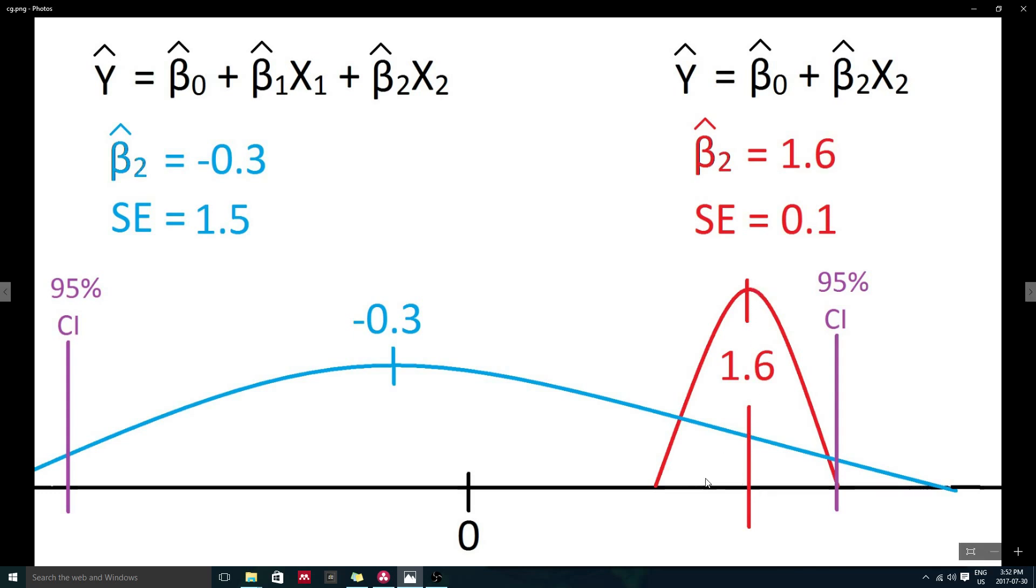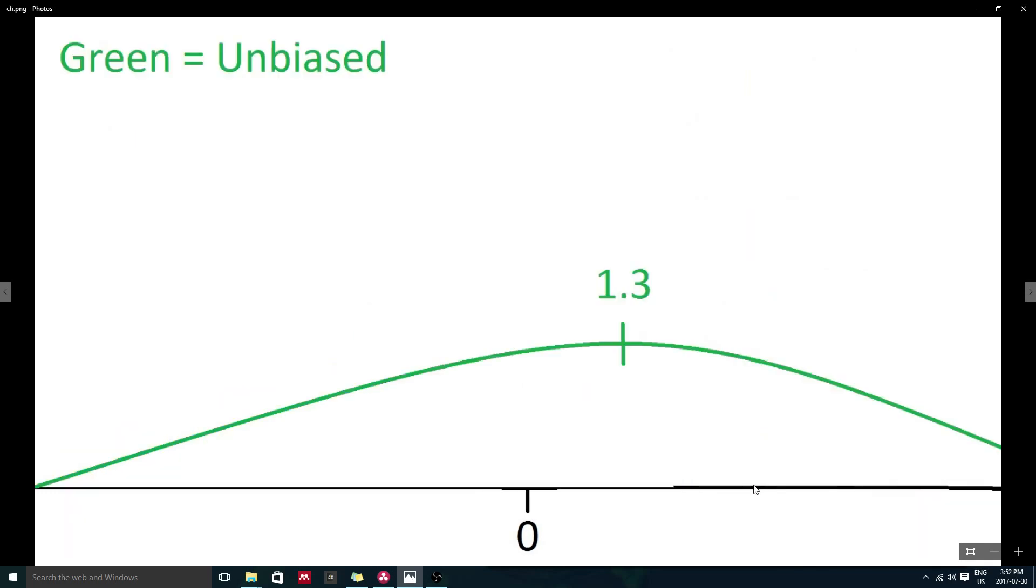So, now that we understand the complications that can arise when dealing with multicollinearity, we can start discussing biased parameter estimation and how it solves this problem. Remember that biased refers to an estimator that does not point to the true value you are trying to estimate.